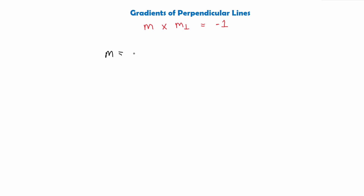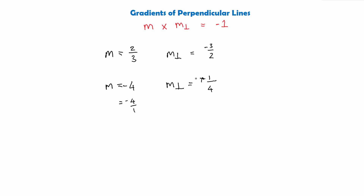For example, if gradient m is two-thirds, we can find the perpendicular gradient by flipping the fraction and changing the sign, giving minus three over two. The same works if the gradient is a whole number like four — since four equals four over one, we flip to get one over four and change the sign, so the perpendicular gradient is negative one quarter. This rule works for all gradients: just flip the fraction and change the sign.